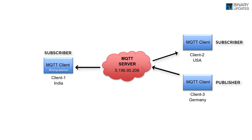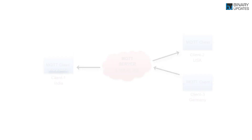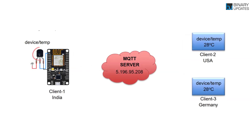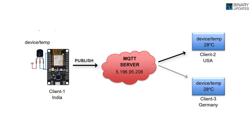Now let's design an IoT architecture using MQTT protocol. Here we have an LM35 temperature sensor connected to a NodeMCU as hardware Client1. We have given a topic named 'device/temp' to the LM35 — a kind of address to represent the sensor. When NodeMCU as Client1 publishes a temperature value of 28 degrees Celsius, Client2 and Client3 will receive that value because they both have subscribed to the 'device/temp' topic. This way, we can monitor temperature data in real-time using MQTT protocol.